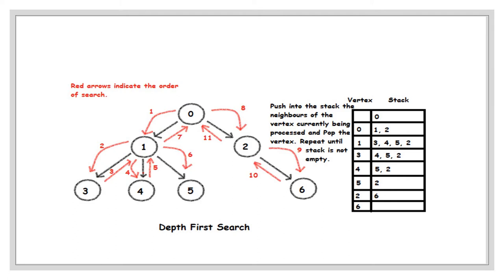It backtracks to the previous vertex to find out whether there are still unvisited vertices. As noted, the search defined above is inherently recursive. We can find a very simple recursive procedure to visit the vertices in a graph depth first. Depth first search is more or less similar to pre-order traversal. The process can be described as below. For example, start from any source vertex in the graph and find the vertex adjacent to it.